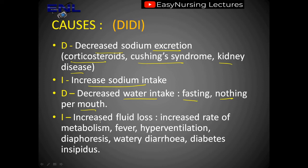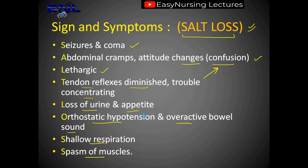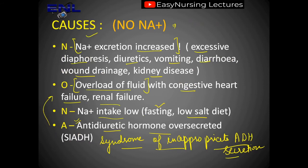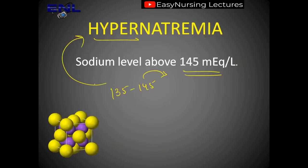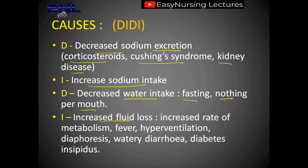From the second I in DIDI, we have increased fluid loss. This is the opposite of hyponatremia which was caused by fluid overload — here there is less fluid in the body. Causes of increased fluid loss include increased rate of metabolism, fever, hyperventilation, diaphoresis, watery diarrhea, and diabetes insipidus — a disease in which too much water is lost.